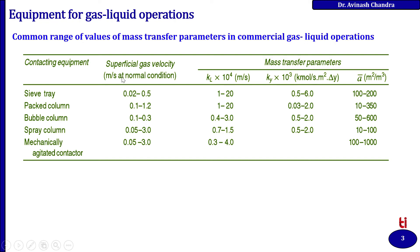The sieve tray provides 0.02 to 0.05 superficial gas velocity, whereas the mass transfer coefficient of the liquid side is 1 to 20, and the mass transfer from the gas side is equal to 0.5 to 6, and similarly the value of A is 100 to 200. These values are also provided for the packed column, bubble column, spray column, and mechanically agitated contact.